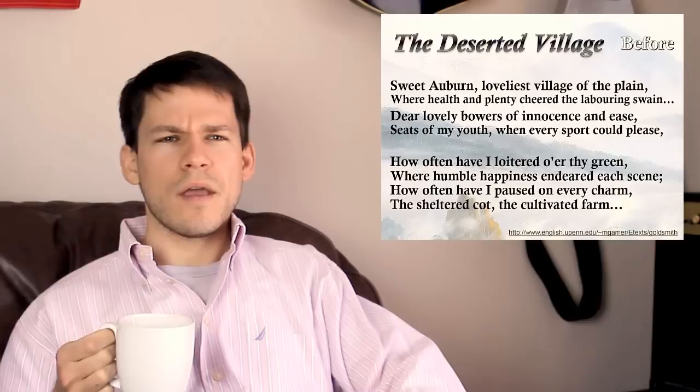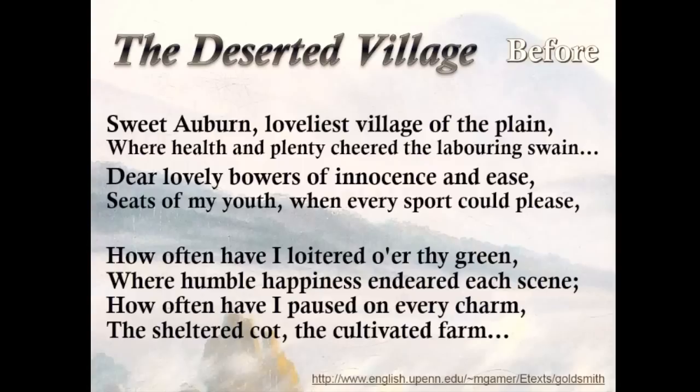There was a lot of literature produced during this time — a lot of Romantic poetry, novels, and art. Oliver Goldsmith wrote a poem called The Deserted Village, a pastoral poem that glorifies rural life. It has a lot of Romantic themes and emphasizes the depopulation of the English countryside, as a lot of people are flocking to cities and leaving the countryside behind. Let's look at how things were before: 'Sweet Auburn, loveliest village of the plain, where health and plenty cheered the laboring swain. Dear lovely bowers of innocence and ease, seats of my youth, when every sport could please.'